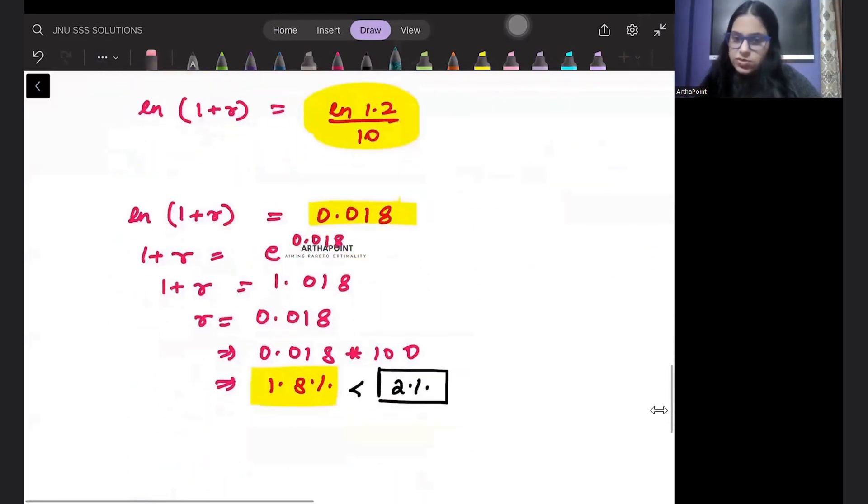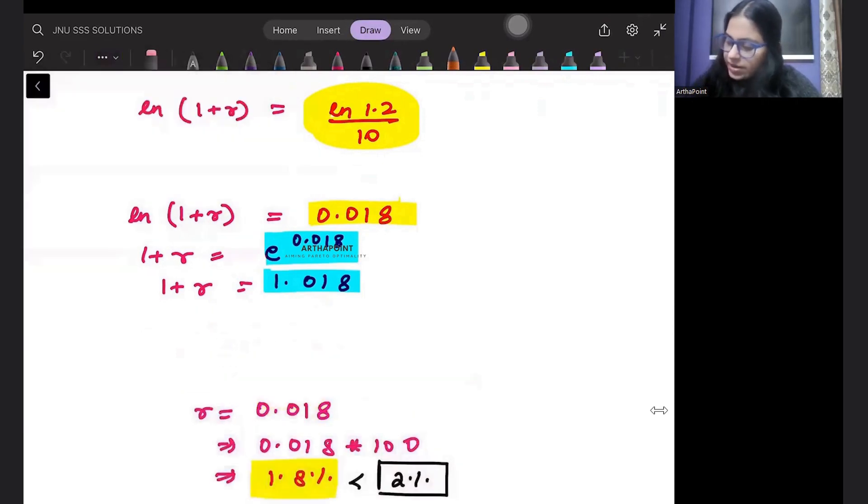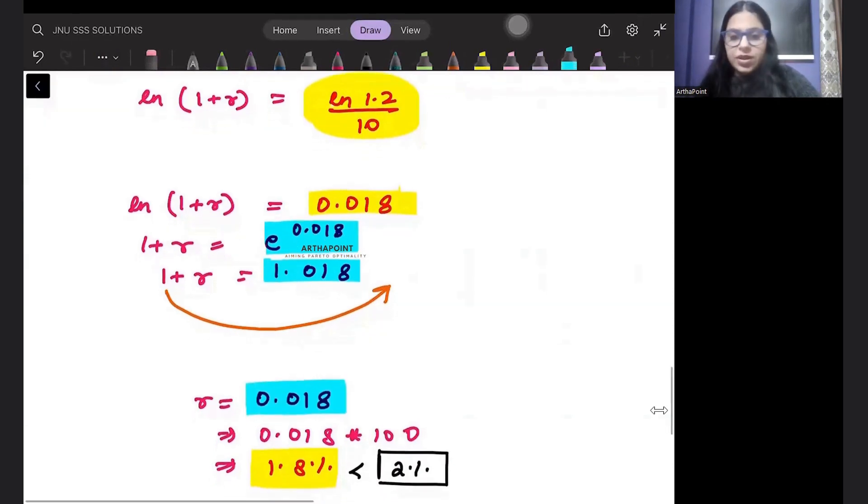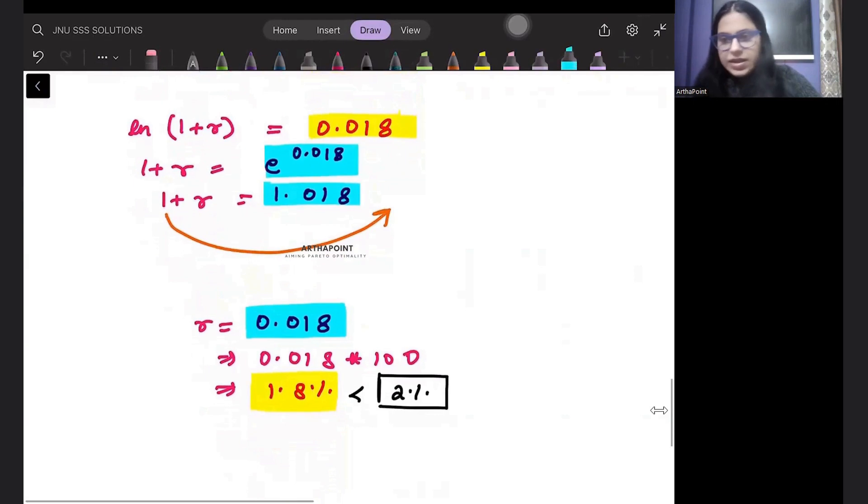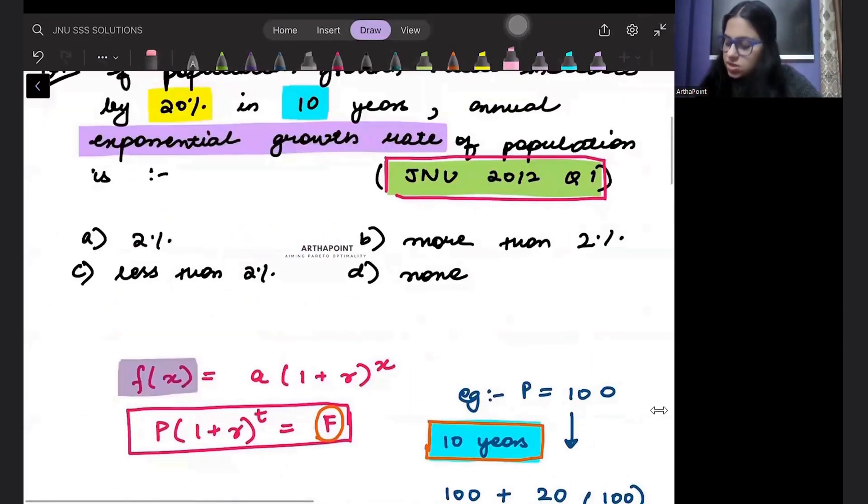When you will solve this, when you will find e to the power 0.018, you will get approximately 1.018. When you take this 1 on the other side, you will get R as 0.018. Multiply by 100 for percentage, so this will give you 1.8%. 1.8 is less than 2%, so the answer to this question will be less than 2%. Answer to this question will be C, less than 2%. Thank you.